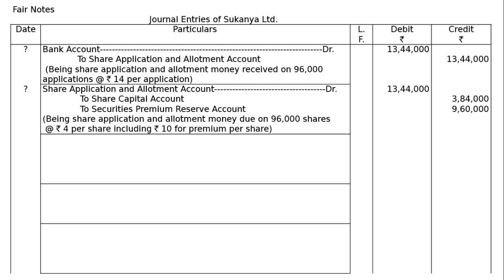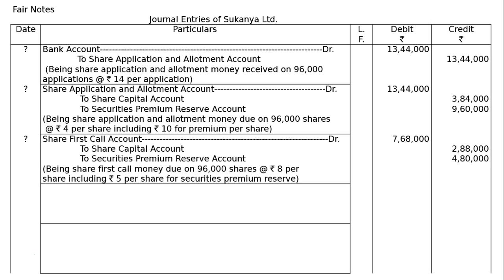Next entry — first call due: Share First Call Account debited (96,000 shares × ₹8 = ₹7,68,000) to Share Capital Account (96,000 × ₹3 = ₹2,88,000) and to Securities Premium Reserve Account (96,000 × ₹5 = ₹4,80,000). Being share first call money due on 96,000 shares at ₹8 per share including ₹5 per share for securities premium reserve.